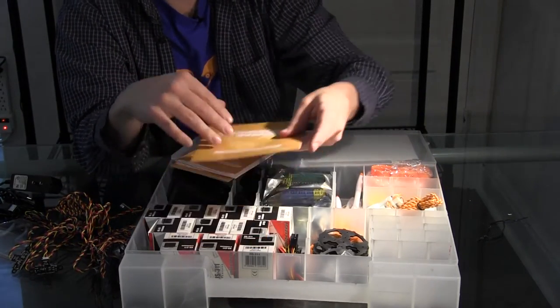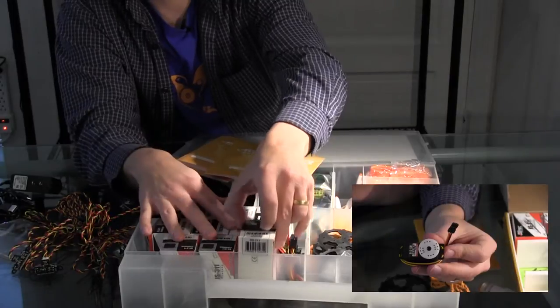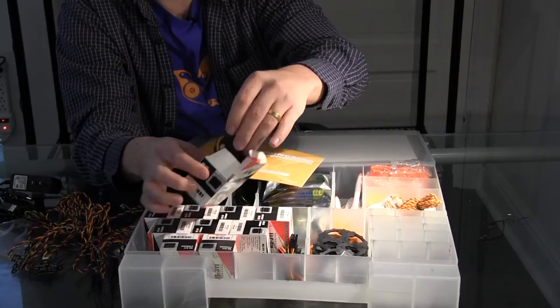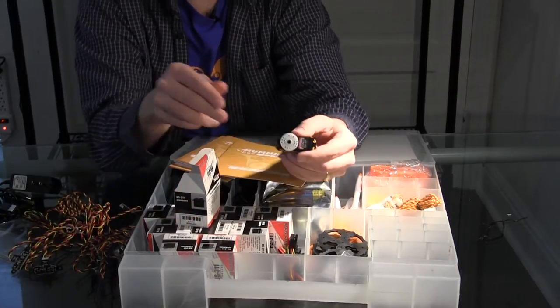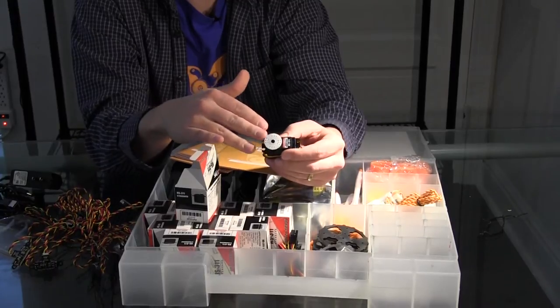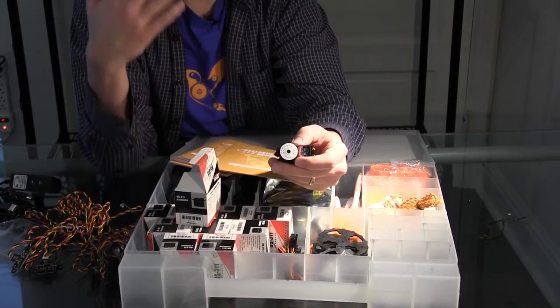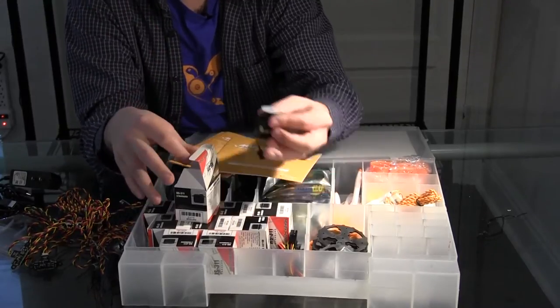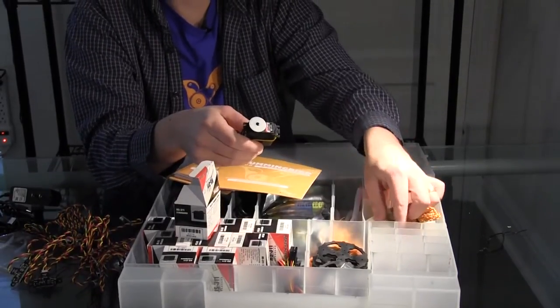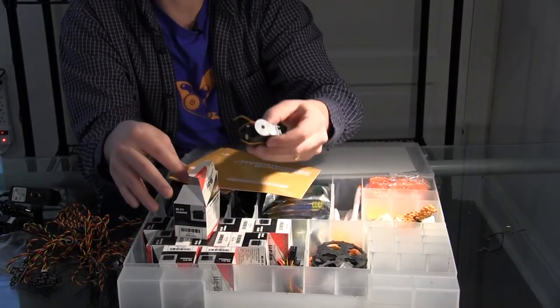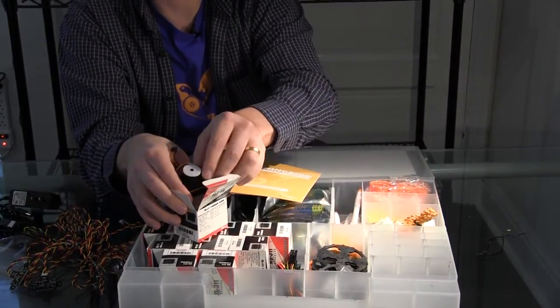We also have ten hobby servos. Hobby servos are great because you can set the angle that they travel to between zero and 180 degrees. So they're often used to make robot arms or robot faces with actuated eyebrows or mouths. So in contrast to the gear motors which spin continuously, the servos, you set them to an angle and they go to that angle and stay there.